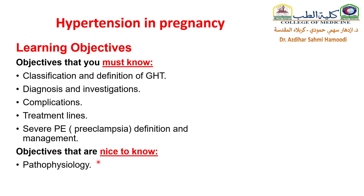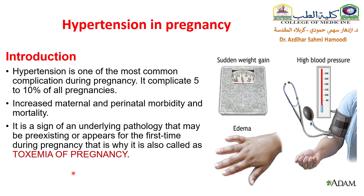The objective that is nice to know is the pathophysiology. Introduction: hypertension is one of the most common complications during pregnancy. It complicates 5–10% of all pregnancies, with increased maternal and perinatal morbidity and mortality. It is a sign of an underlying pathology that may be pre-existing or appears for the first time during pregnancy, which is why it is sometimes called toxemia of pregnancy.